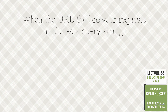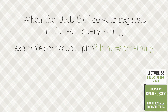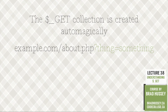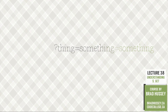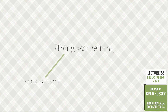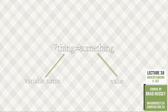When the URL the browser requests includes a query string, which looks like this, the GET collection is created automagically. The string on the left side of an equals sign becomes a variable name, and the thing on the right side of the equals sign becomes that variable's value.